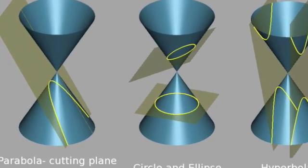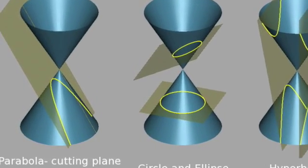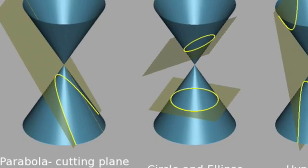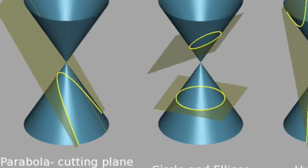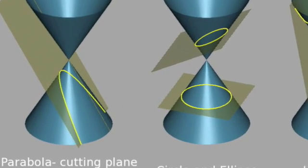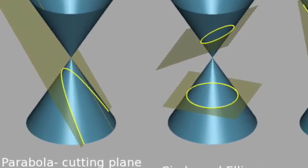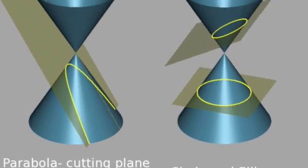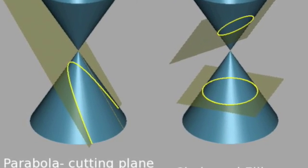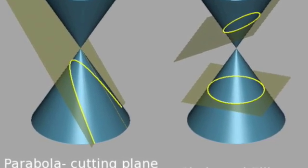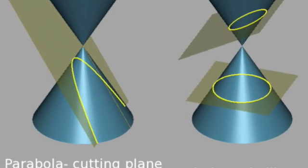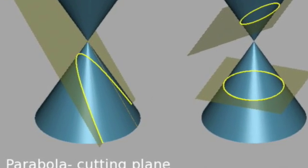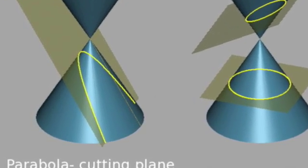Parabolas are one of the four conic sections we will discuss this chapter. They are formed by slicing one of the cones of a conic on a diagonal. They are used in design and architecture for their properties. Here are a few examples of where they are seen.